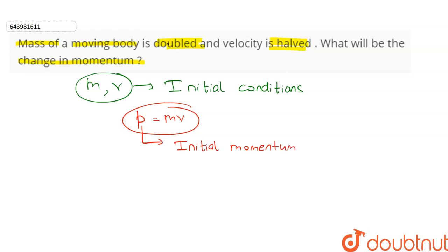Now it is said that the mass of the moving body is doubled. Therefore, the new mass m dash is equal to 2m. And the new velocity, denoted as v dash, is halved, therefore it is v by 2. Here, m dash and v dash are the final conditions.